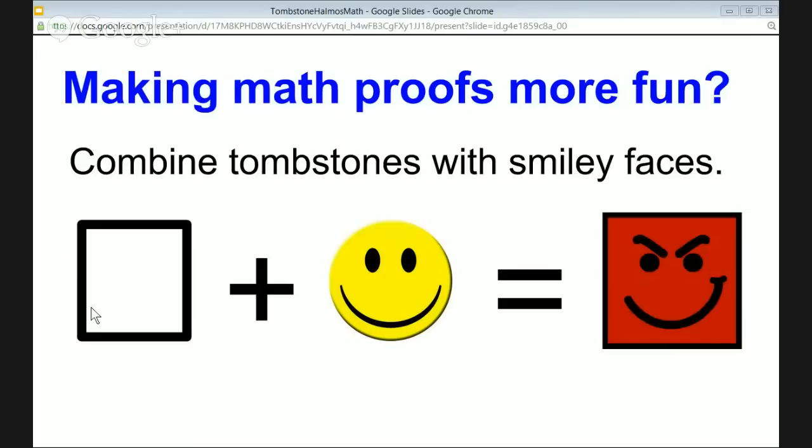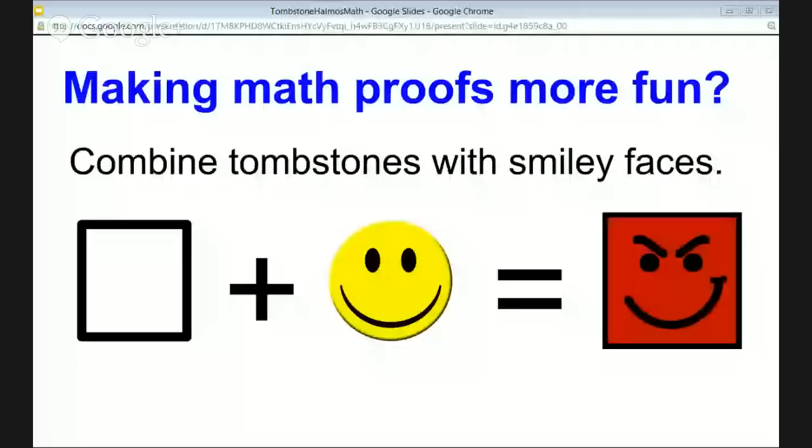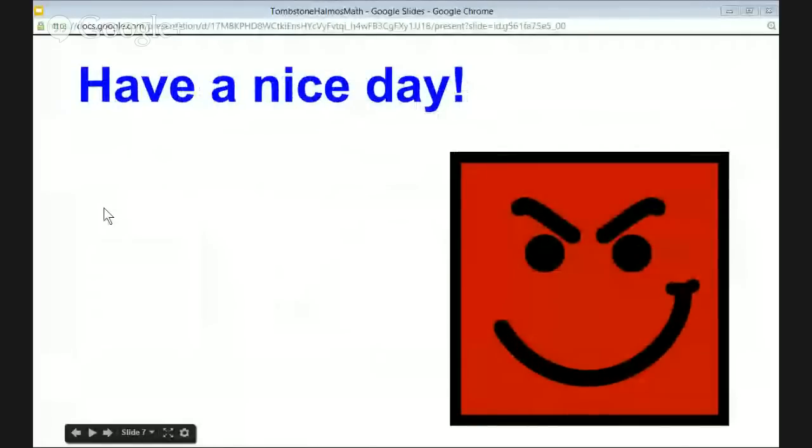So tombstone plus smiley face at the end of the proof — what do you get? Well, you get a tombstone or a square smiley face. That's the kind of thing I like doing — it makes it a bit more fun, less dark and dreary, like maths belongs in a cemetery. But I really like it! So what do you think — how do you end your proofs? What would you like to see at the end of proofs? Thanks for watching everybody, have a nice day. See you later, bye!